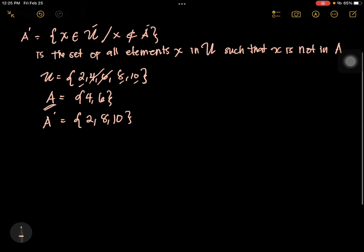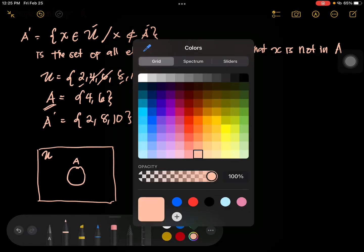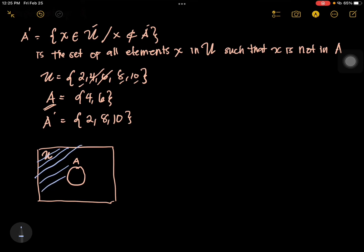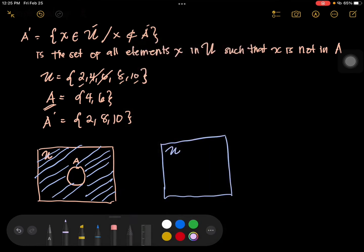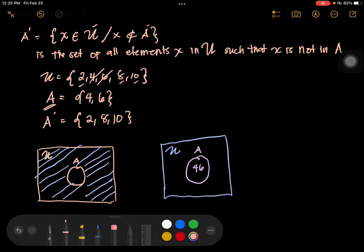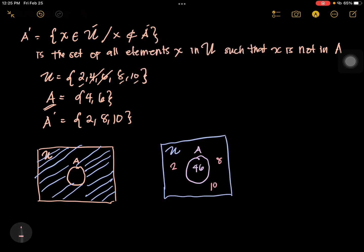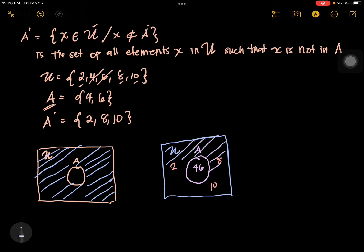In a Venn diagram, this is how you illustrate it. This is the universal set and this is our set A. When you see complement, you shade the area that is outside set A. In our given example, set A contains 4 and 6, and 2, 8, 10 are outside. What you shade is only the area outside set A.